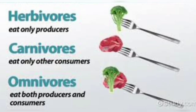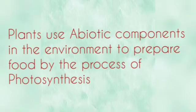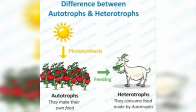Animals that eat only plants are known as herbivores; animals that eat only meat are called carnivores; and animals that eat both plants and animals are termed omnivores. The plants, who are the producers, use abiotic components such as air, water, and sunlight for the preparation of food by the process of photosynthesis. The consumers either directly or indirectly depend on these plants for their food — and this is how the interdependence of living and non-living beings takes place.